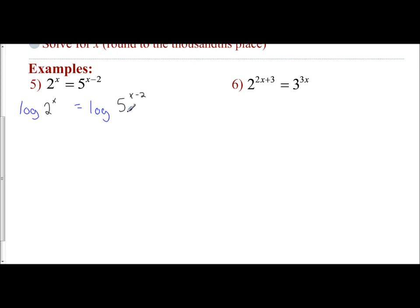So to solve this, the exponent comes out and becomes the coefficient of the log. So x times log of 2 is equivalent. Now I have an expression, so I bring that down. It goes into parentheses. x minus 2 times the log of 5.